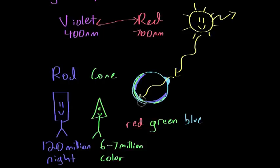Cones are concentrated in a specific region of the retina called the fovea. There are almost no rods in the fovea — almost all the cones are centered there. The fovea is the part of the eye that lets us see really fine details. For example, if you're searching for Waldo, the fovea is what lets you find him.